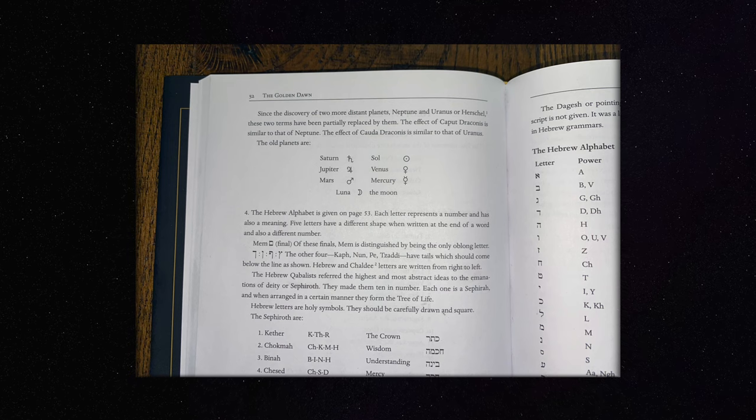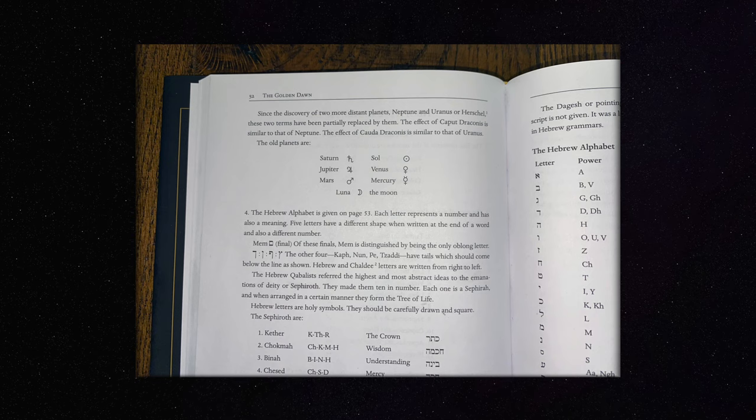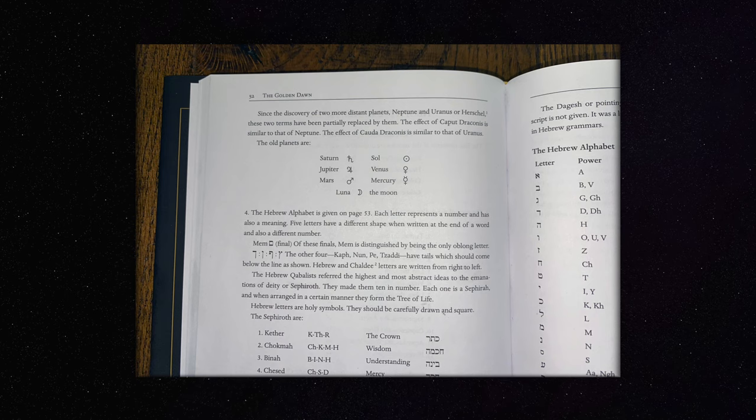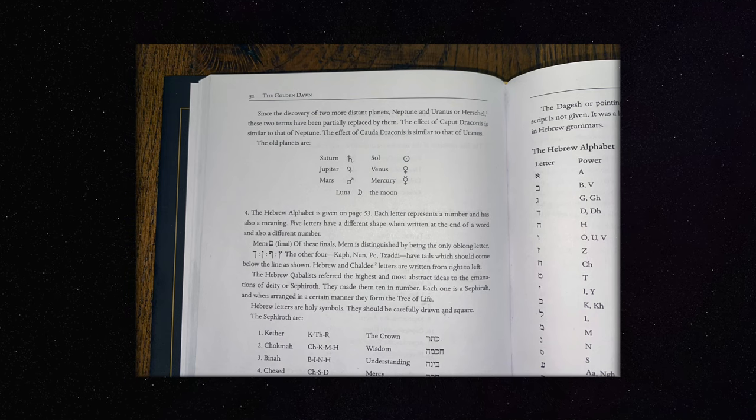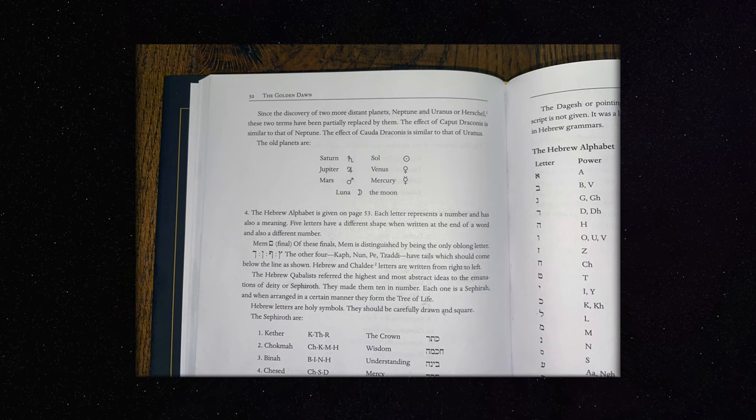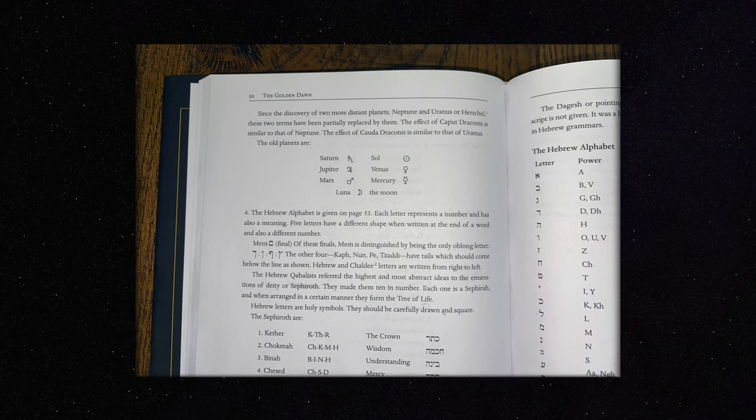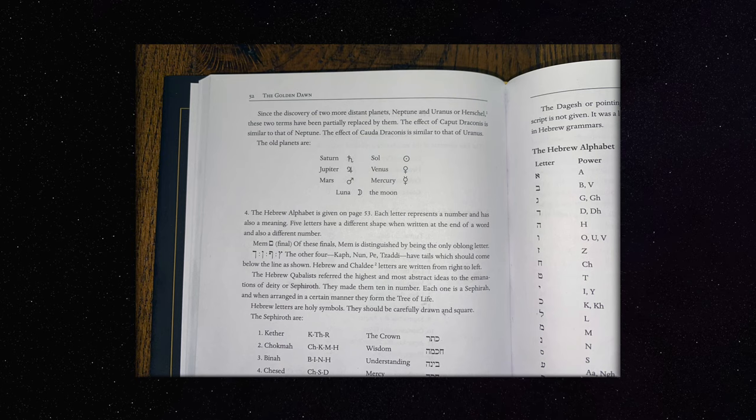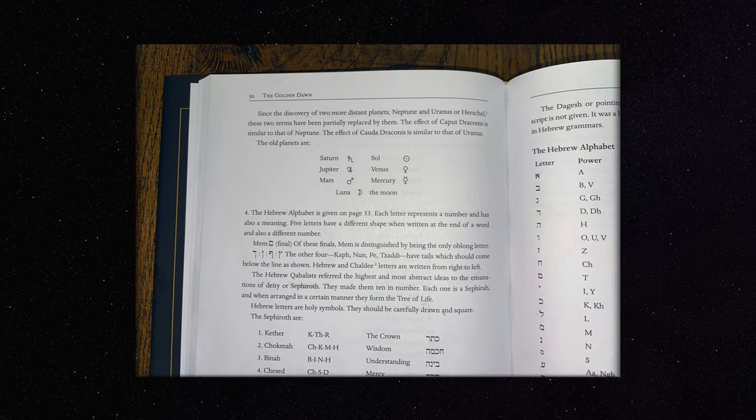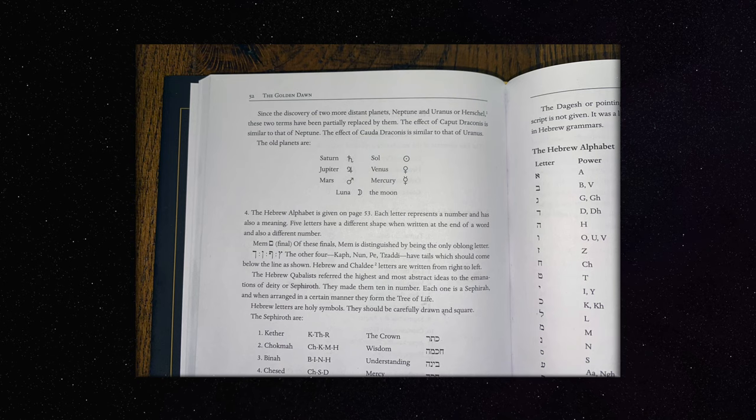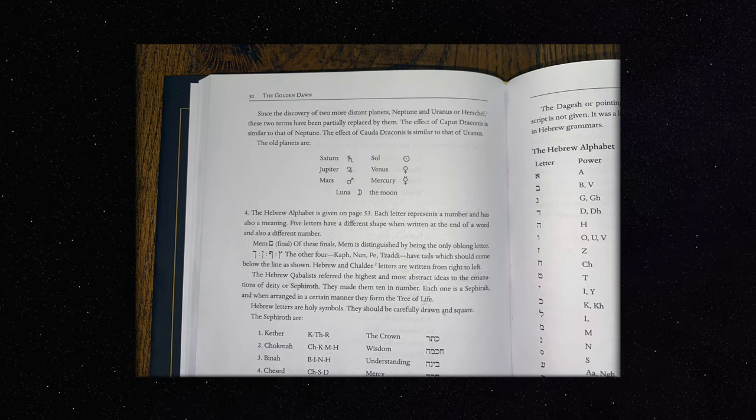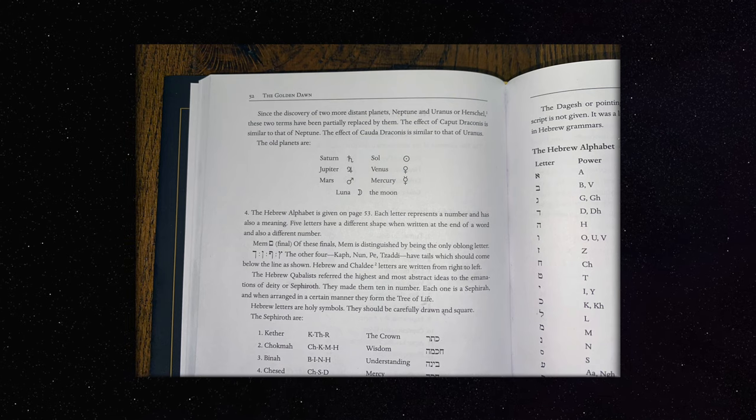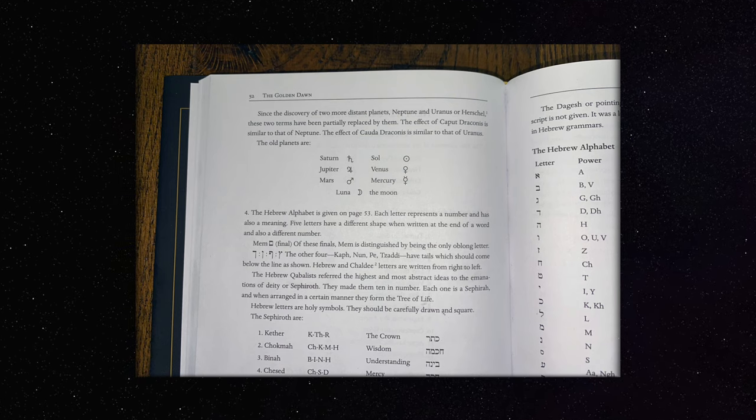Four: the Hebrew alphabet is given on page 53. Each letter represents a number and has also a meaning. Five letters have a different shape when written at the end of a word, and also a different number. Mem, final. Of these finals, Mem is distinguished by being the only oblong letter. The other four, Kaf, Nun, Peh, Tzadi, have tails which should come below the line as shown.